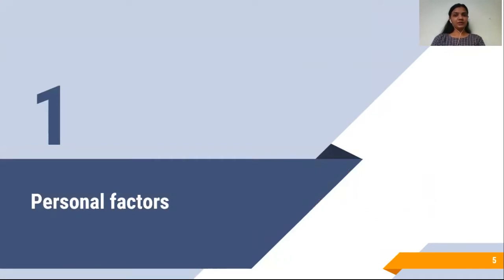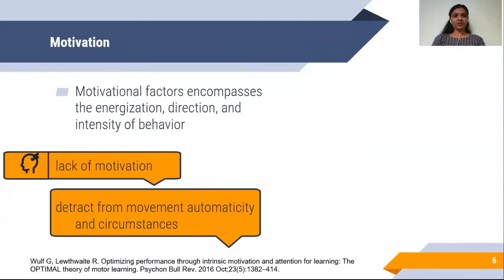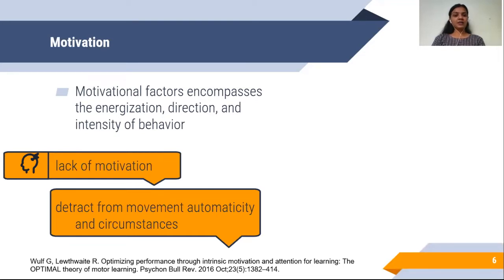The first personal factor is motivation. Motivation can vary from task to task while performing any activity and it can also vary with the condition. According to a review published in 2016 on optimizing performance through intrinsic motivation and attention for learning, the authors inferred that motivational factors have the energization, direction, and intensity of behavior.